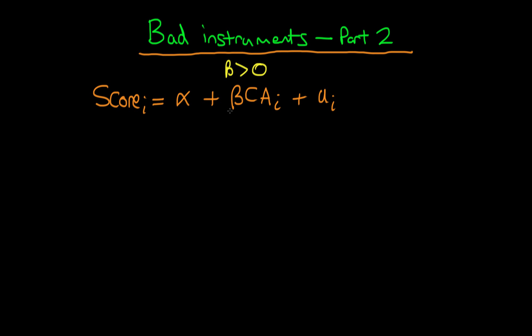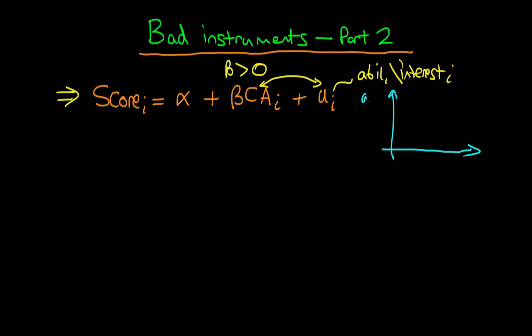The problem with estimating this relationship via OLS is that there are likely a range of other factors correlated with classroom attendance which are contained within the error UI. An example might be an individual's level of ability or level of interest in the class. If we were to do a scatter plot of ability or interest against classroom attendance, there would likely be a positive correlation, because those who are more interested or more able are more likely to attend class. That's the problem with estimating this relationship via OLS.